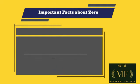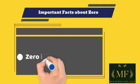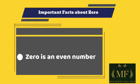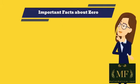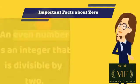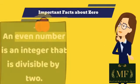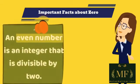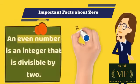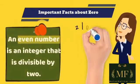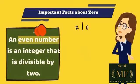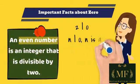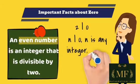Zero is an even number. Recall that an even number is an integer that is divisible by 2, and zero is divisible by 2, so it is an even number. In fact, it is divisible by any other integer or even a real number.